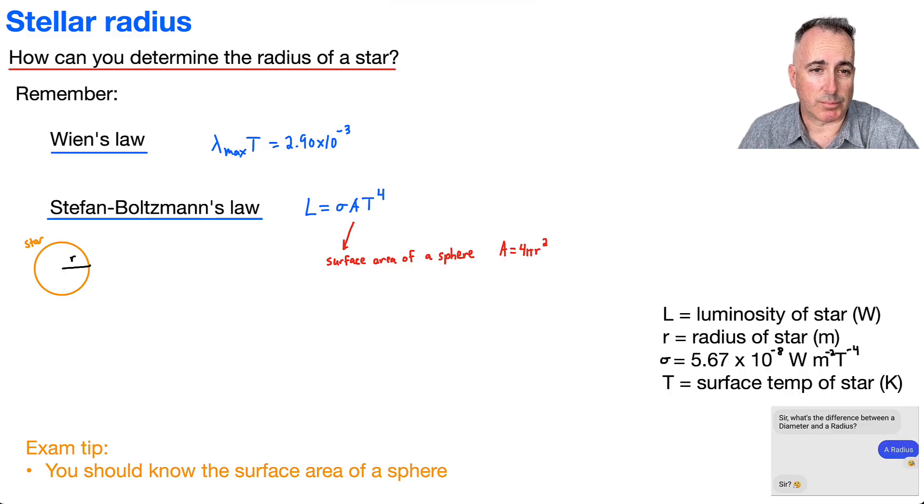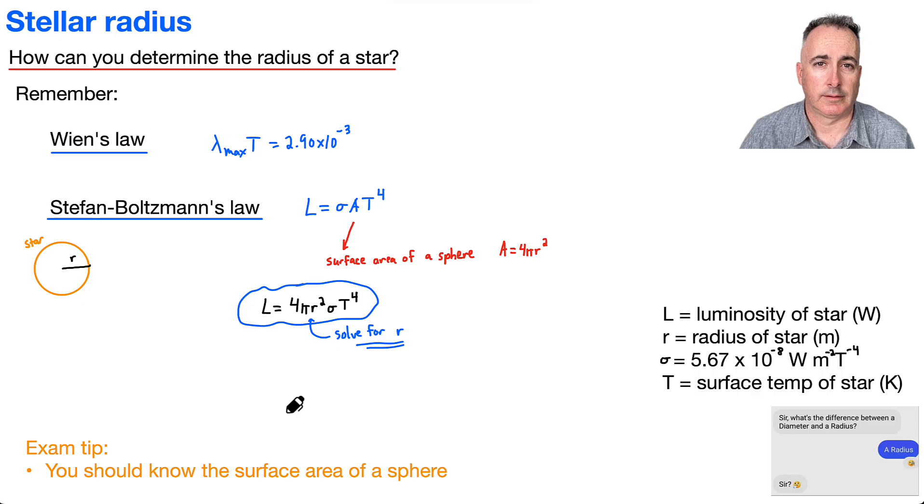So that means we can put this together. That means that L equals sigma times 4πr². But we normally put the 4πr² before it. So I'll say it's 4πr² times sigma times T to the fourth. So that means this right here is the equation then that I could use to solve for R. And that's the key. That's how you can find that, because R is going to be the radius of your star.